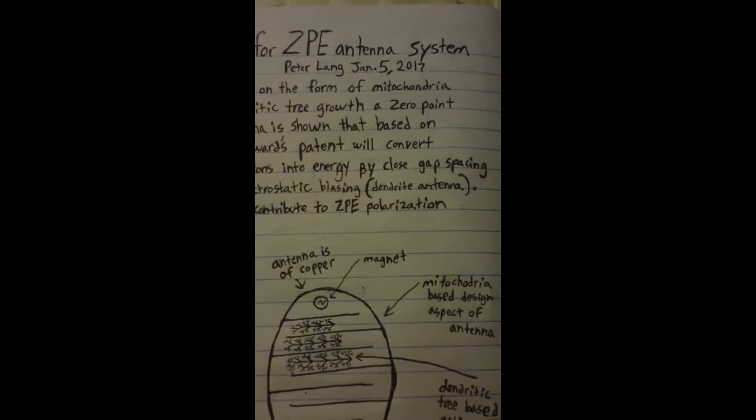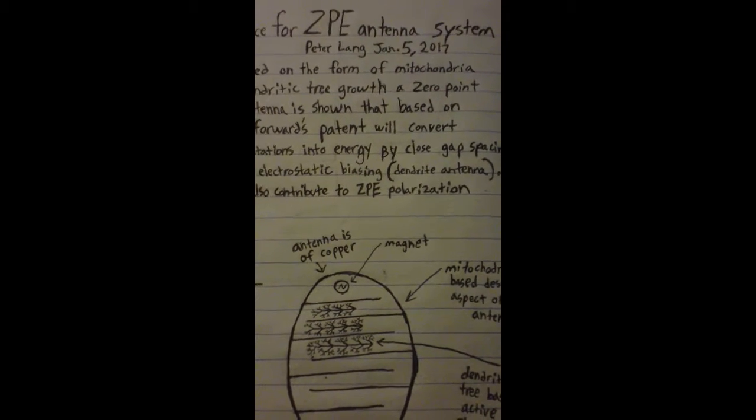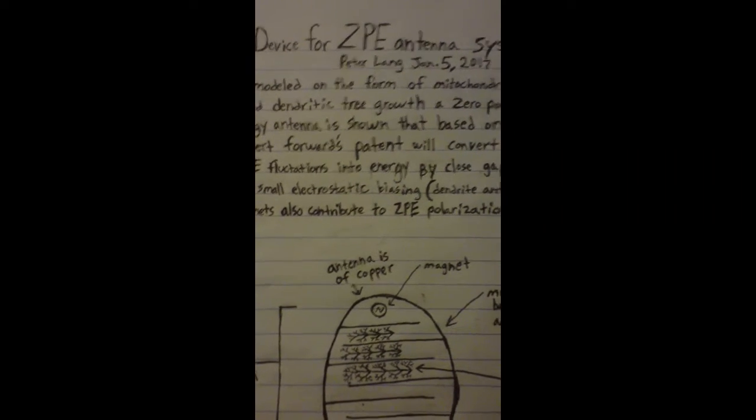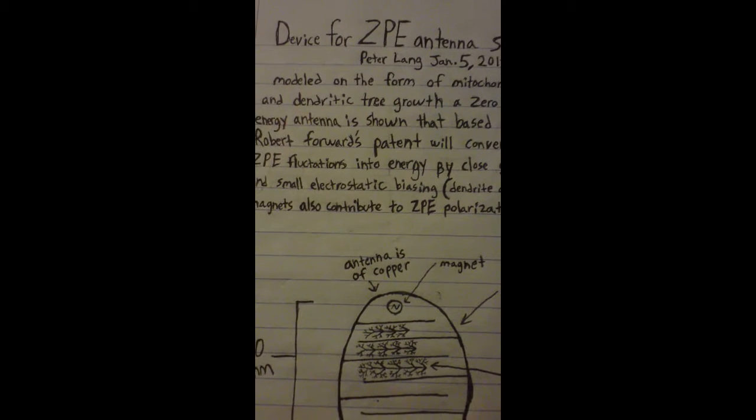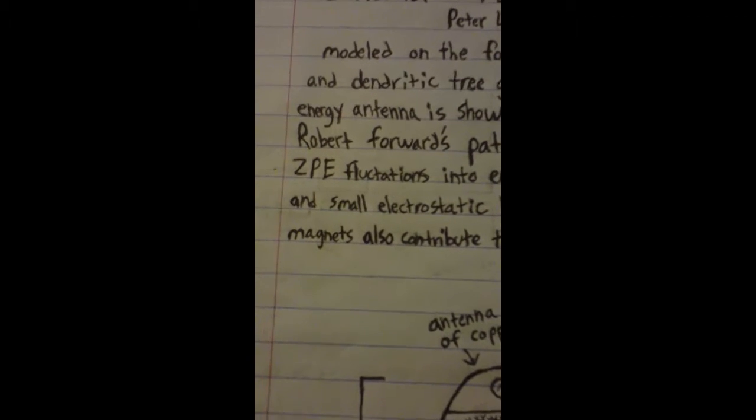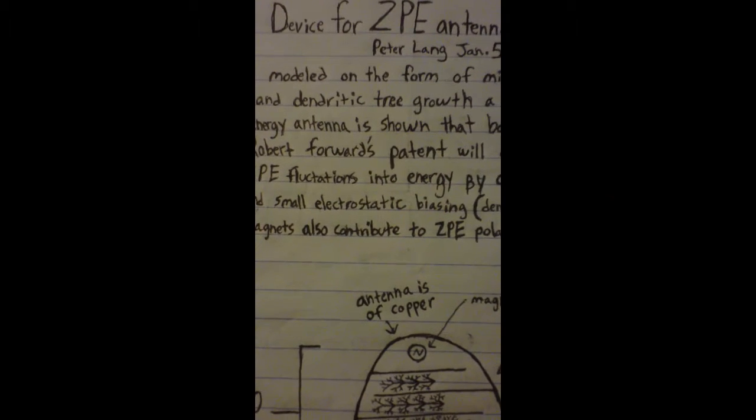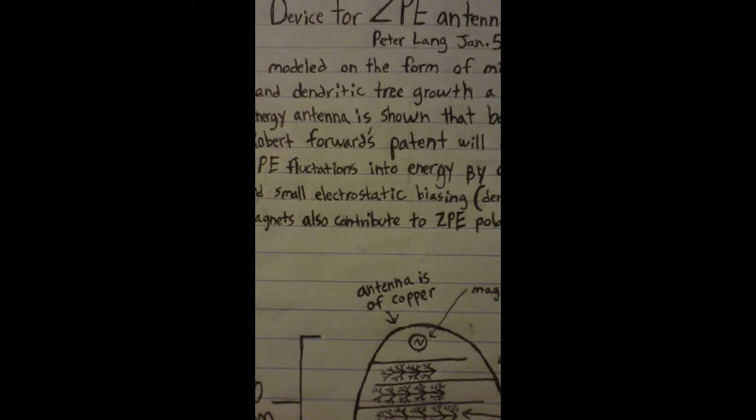Polarization of the ZPE produces electrical current, and it's possible to create antennas that will do this. One of the original patents on zero-point energy antennas was by Robert Forward. Robert Forward's patent uses two parallel plates with a coil of wire between them.